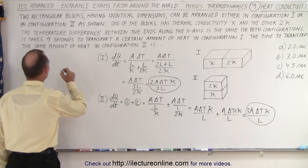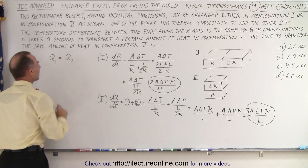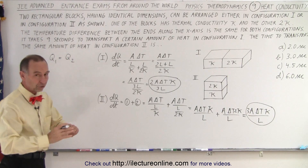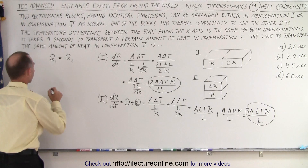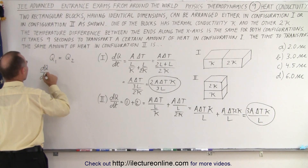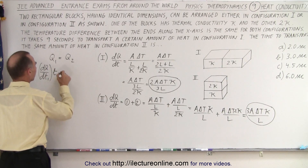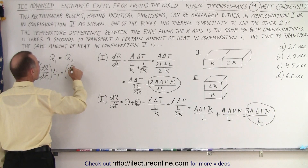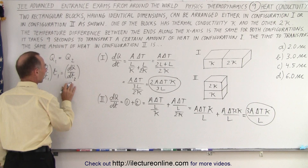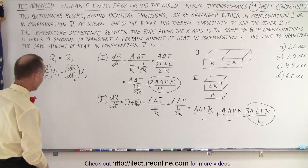Now we can say that Q1, the amount of heat going through configuration 1, must equal Q2 — the amount of heat flowing through both is the same, just the time will be different. So we write: (dQ/dt)₁ times t₁ equals (dQ/dt)₂ times t₂, and t₂ is the unknown we are trying to find.